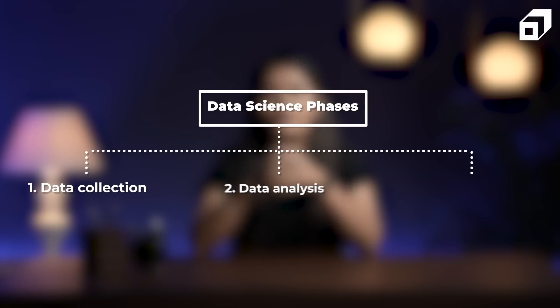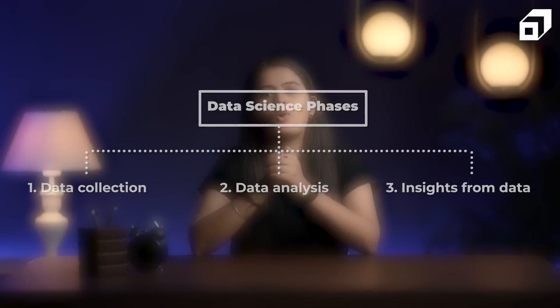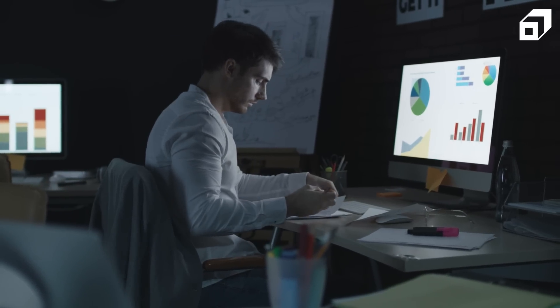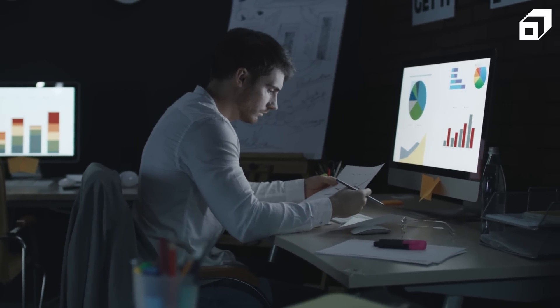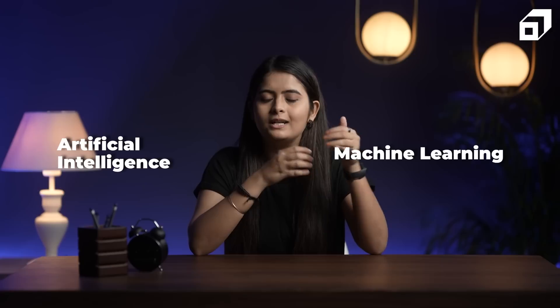In data science, there are three main parts: number one is collecting the data, number two is analyzing the data, and the final step is squeezing insights from the collected data to solve bigger business problems. The languages that data scientists use are mainly Python and R programming. Features we see on applications like YouTube and Netflix — like autocorrect and autocomplete — are possible because of data science. Concepts like AI and ML are all part of data science.